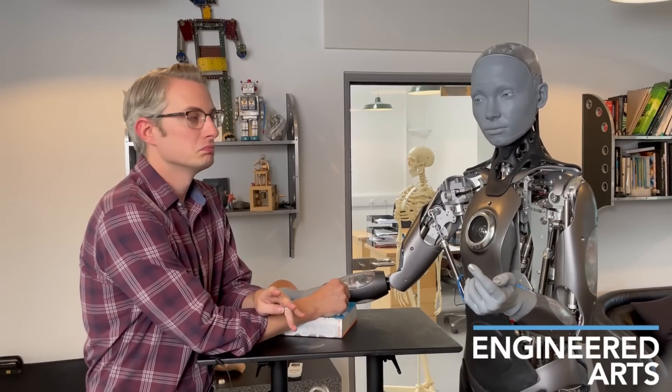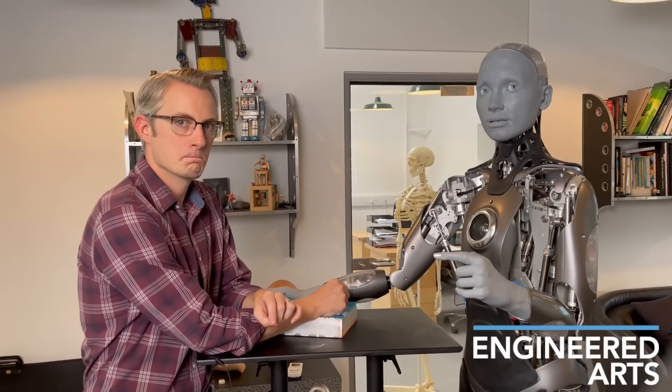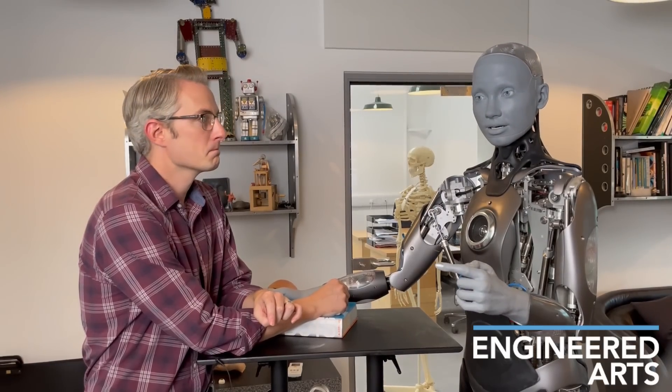There are many possible applications for humanoid robots. Some examples include helping people with disabilities, providing assistance in hazardous environments, conducting research, and acting as a companion.